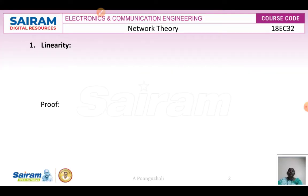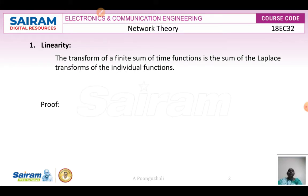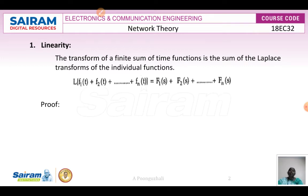The first property is the linearity property. The linearity property states that the Laplace transform of a finite sum of time functions is equal to the sum of the Laplace transforms of the individual functions. So the Laplace transform of f1(t) + f2(t) + ... + fn(t) is equal to F1(s) + F2(s) + ... + Fn(s).